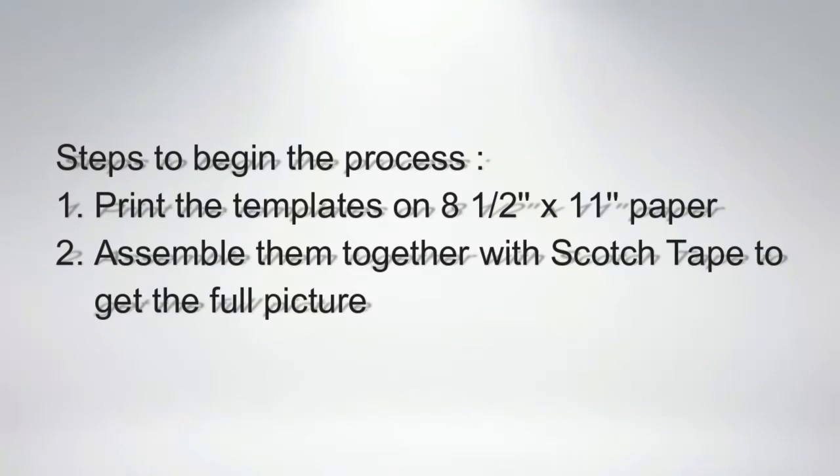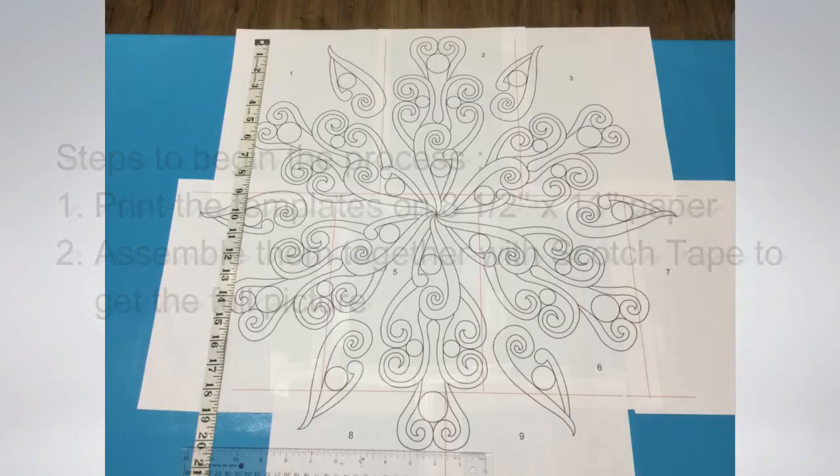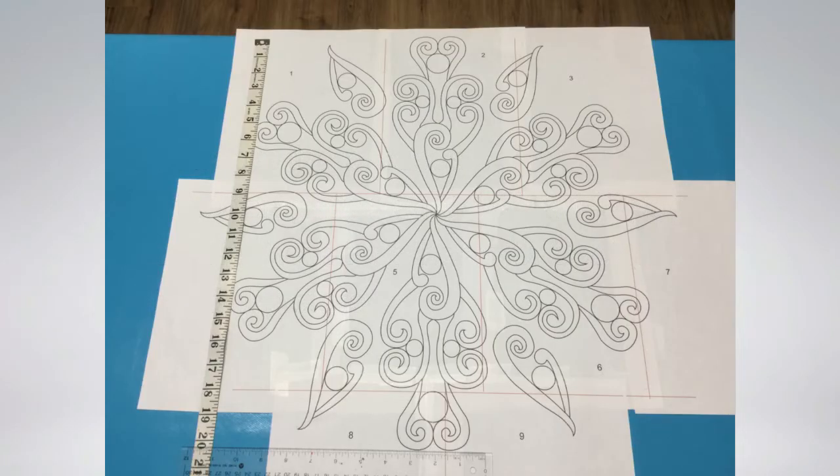To start the process there are four simple steps. Print the black and white sets of templates that will allow you to place the applique on the background at the end. You will find those in most of my patterns. Then assemble them with scotch tape to get the full picture. Put this paper aside for now and we'll get back to it later.